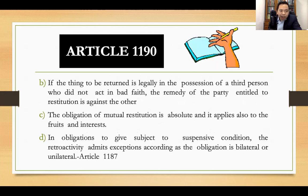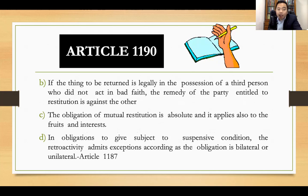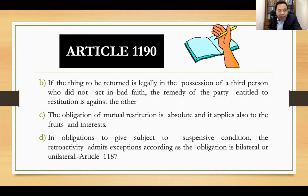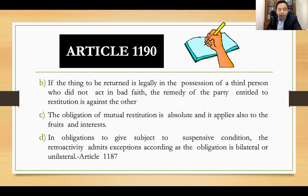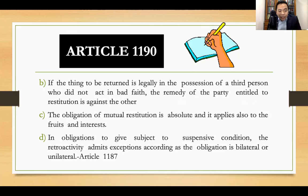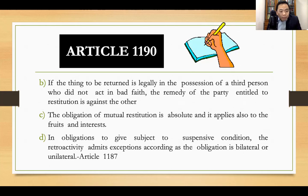Second, if the thing to be returned is legally in the possession of a third person who did not act in bad faith, the remedy of the party entitled to restitution is against the other party. The obligation of mutual restitution is absolute and it applies also to fruits and interests — not only to the principal but also to fruits and interest. In obligations to give subject to a suspensive condition, the retroactivity admits exceptions according to whether the obligation is bilateral or unilateral under Article 1187.